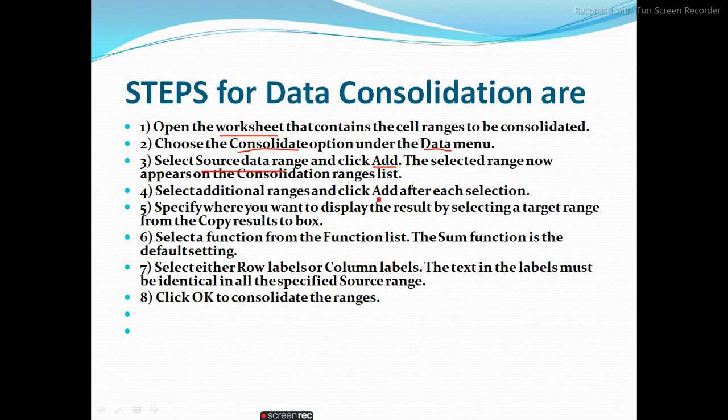The selected range now appears on the consolidated ranges list. For example, you can select data from A1 to E1, which is the cell address. Select an additional range and click Add after each selection. If you have already selected data and want to add more, you can do so. Also specify where you want to display the result by selecting a target range from the 'Copy Result To' box.